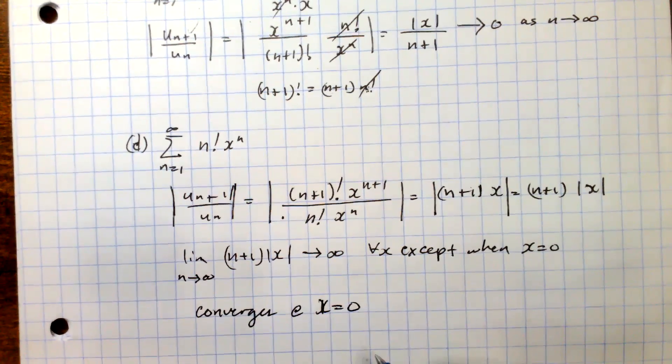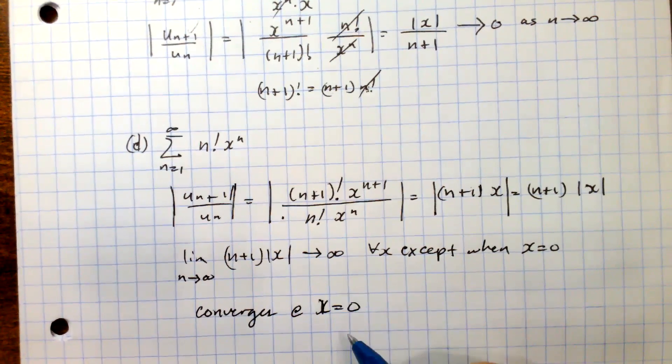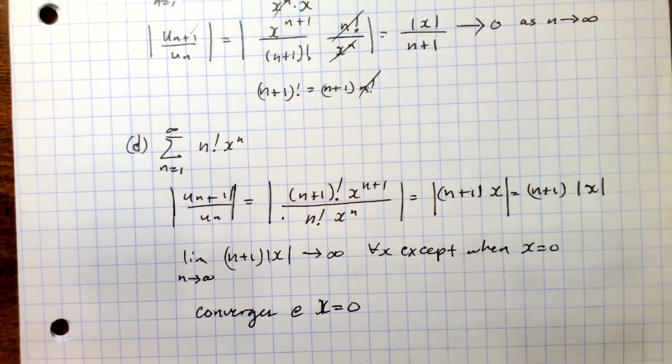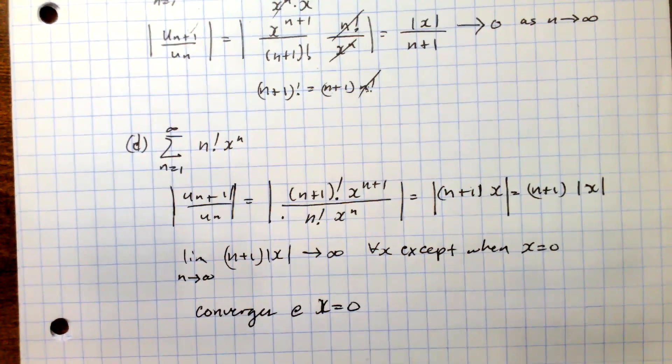So this series converges only at x = 0 — a single point. It diverges everywhere else.